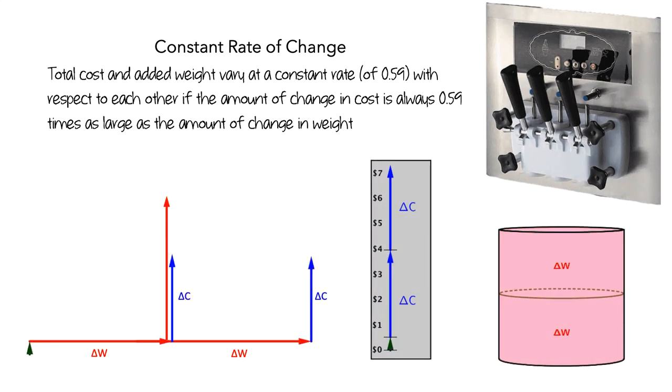If we compare the lengths of the arrows in each section, we can see that the amount of change in cost is about 0.59 times as large as the amount of change in weight.